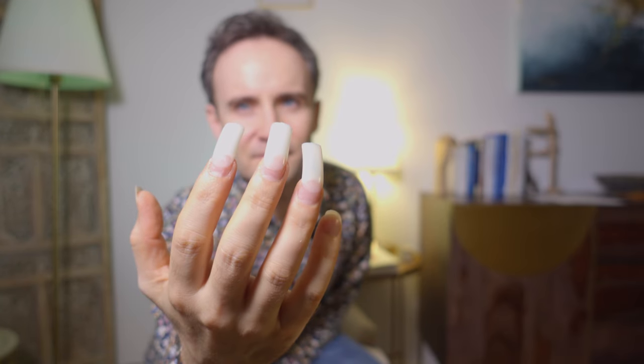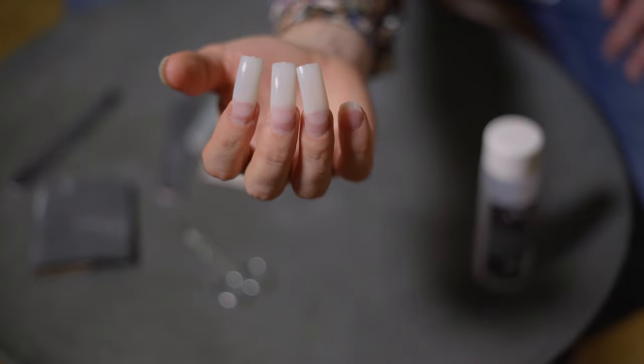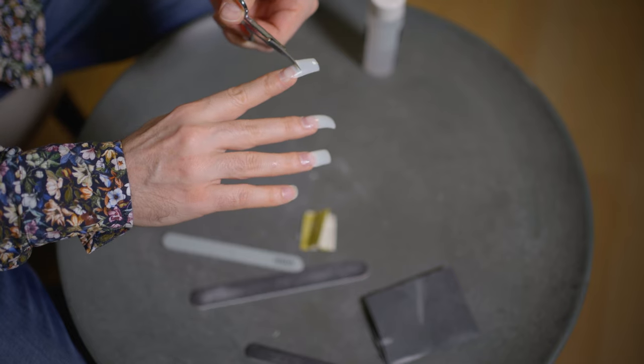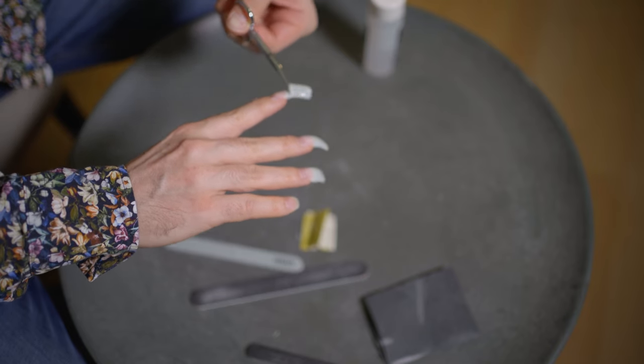The finished nails look like this. And what do you have to do next? Then I shorten it carefully with scissors and shape it like I'm used to. After doing this you have it.